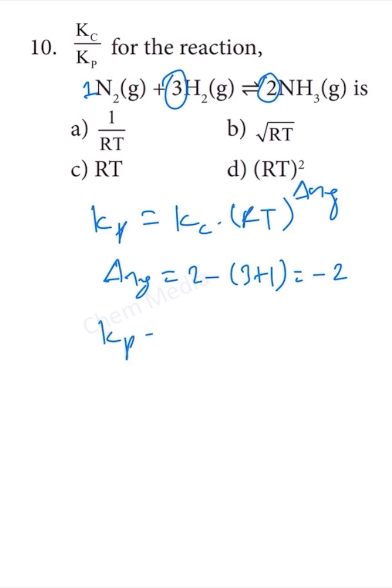This means Kp equals Kc times RT to the power of minus 2.